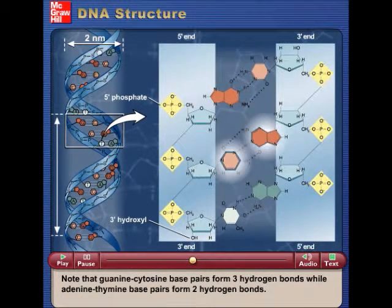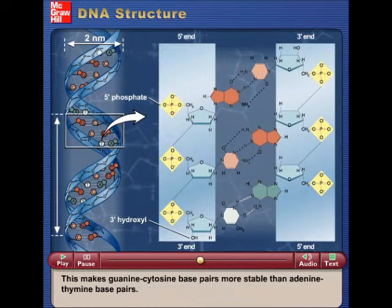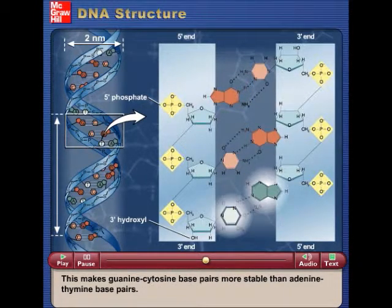Note that guanine-cytosine base pairs form three hydrogen bonds, while adenine-thymine base pairs form two hydrogen bonds. This makes guanine-cytosine base pairs more stable than adenine-thymine base pairs.